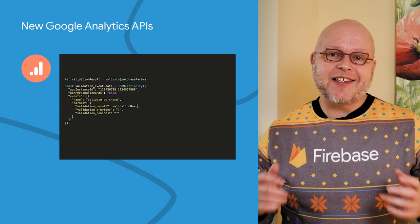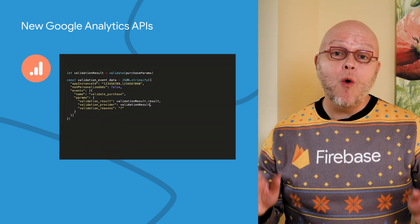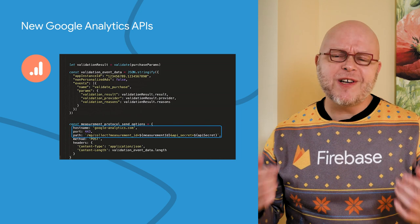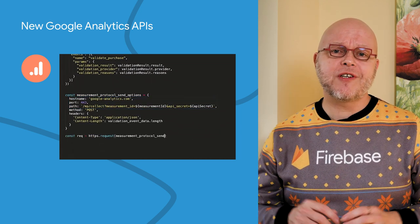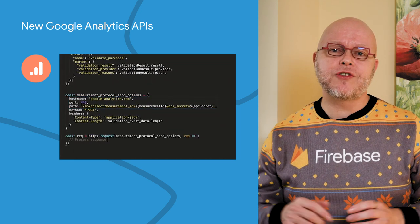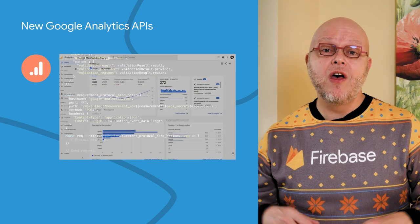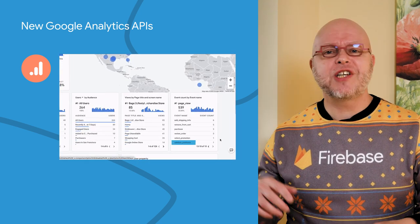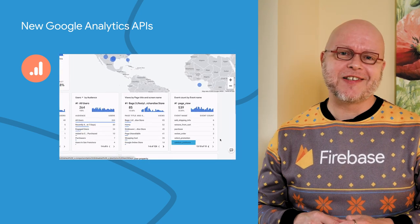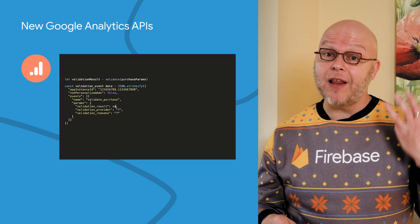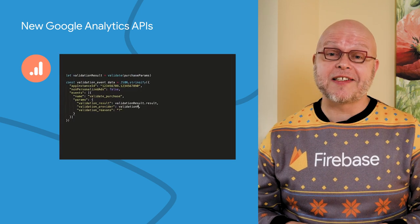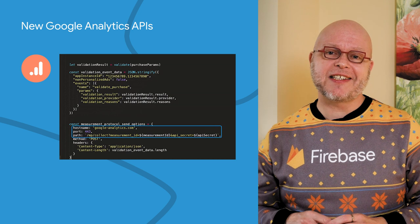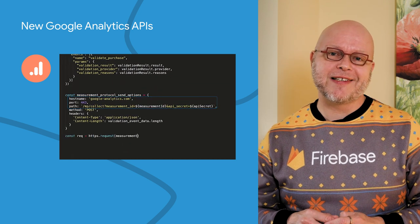A key factor in scaling a successful app is knowing how your users are interacting with it. Our robust integration with Google Analytics helps you understand what actions your users are taking inside your app, where they are spending their time, and why they churn, so that you can make smarter decisions. We recently added three new analytics APIs that help you collect, record, and manage analytics data in a way that suits your growing business.